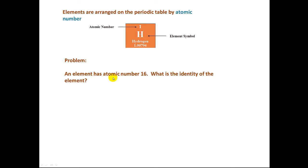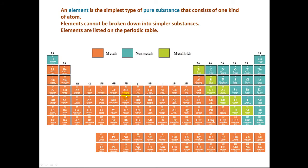Problem: An element has atomic number 16. What is the identity of the element? Well, we have to look that up on the periodic table. We go to the periodic table and we look up atomic number 16, which is right here. And it turns out the element is sulfur. So the atomic number helps us identify an element.